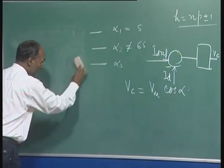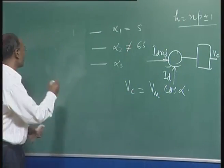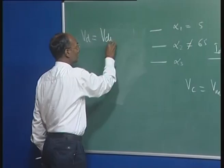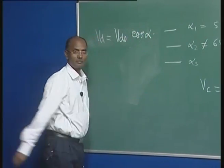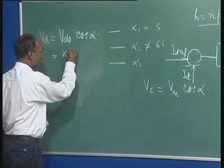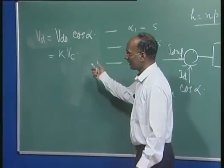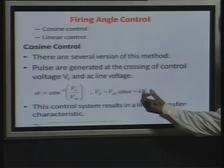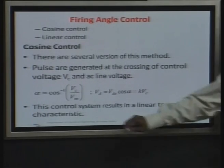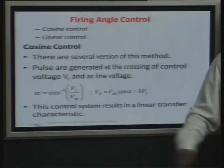Because output voltage is proportional to cos(alpha), and V_C = V_m cos(alpha), the output voltage is proportional to V_C — a linear transformation. This control scheme results in a linear transformation characteristic. It gives a linear relationship between V_C and output voltage.